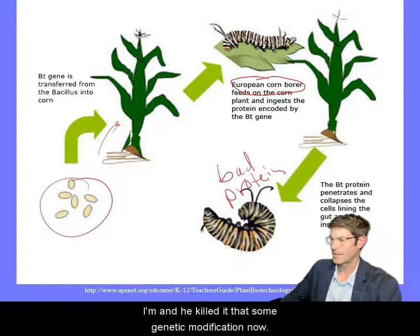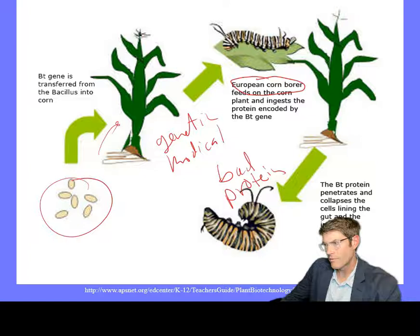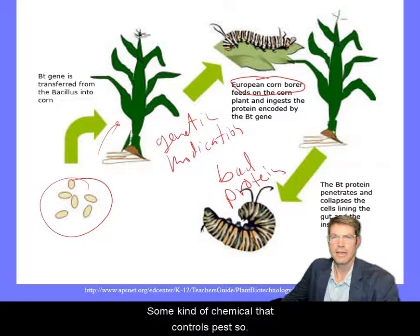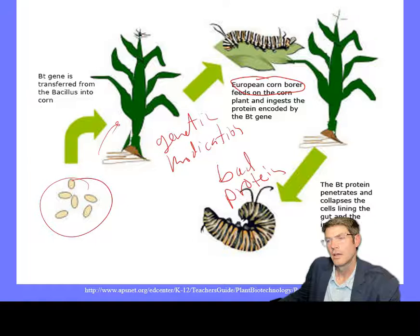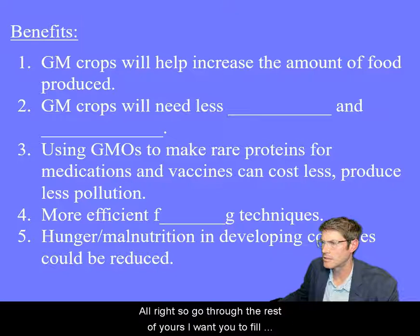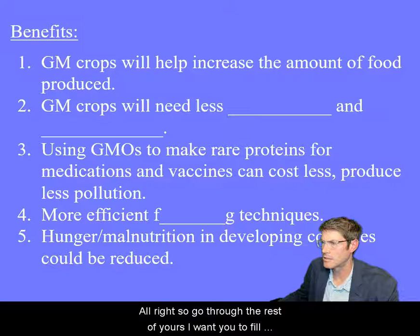Farmers almost always use some kind of chemical to control pests unless it's completely organic, which is rare. If you don't use the BT gene, you're probably going to apply some other chemical — so it's a trade-off. Like anything in biology, we need to be aware of those trade-offs; there's never a perfect answer. Fill out the benefits of GMOs, potential harmful effects, PCR, and the ethics of all those things — and that's it for video 5.5.